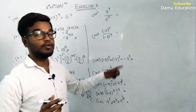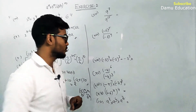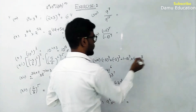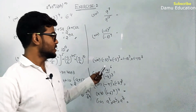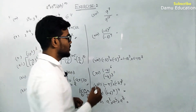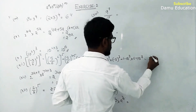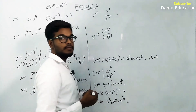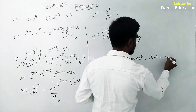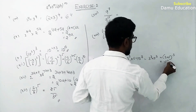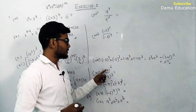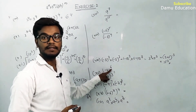Minus 3 whole cube stays minus 3 cubed, and minus 5 whole cube stays minus 5 cubed, because the power 3 is odd. Both are negative. Using a power m into b power m equals a b whole power m: we get minus 3 into minus 5 whole cube, which is minus times minus equals plus, giving 15 whole cube.